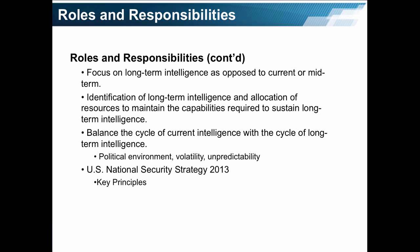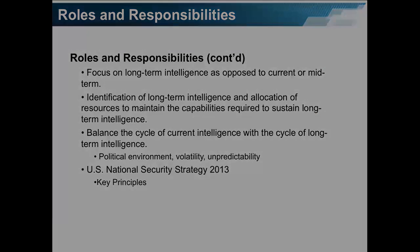In addition to the roles and responsibilities is to focus on long-term intelligence as opposed to current or mid-term, and the identification of long-term intelligence and allocation of resources to maintain the capabilities required to sustain it. Balance the cycle of current intelligence with the cycle of long-term intelligence — and this cycle is affected by the political environment, by volatility, and by unpredictability. They also produce the US national security strategy. We are going to look at the strategy of 2013 and focus on its key principles after we see in the next slide the challenges faced by strategic leaders within the USIC.